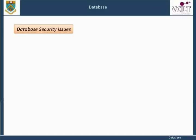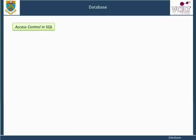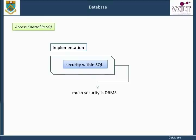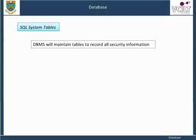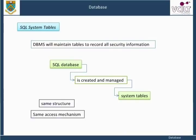The section reviews some of the issues that arise in determining the security specification and implementation of a database system. The section is about the implementation of security within SQL. The basics are given in SQL 92, but much security is DBMS and hardware specific. The DBMS will maintain tables to record all security information. This will include, in SQL databases, tables created and managed using system tables, which comprise a relational database using the same structure and access mechanism as the main database.